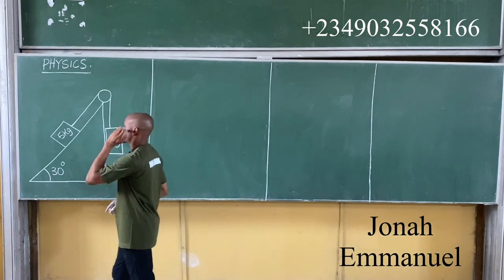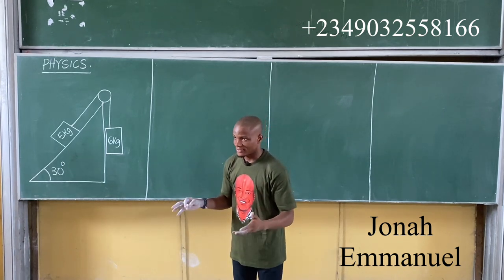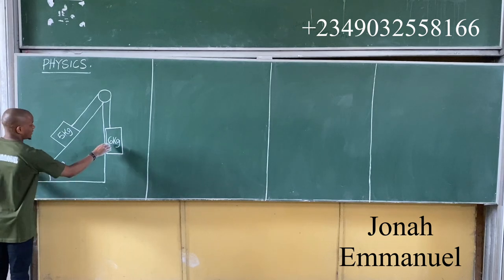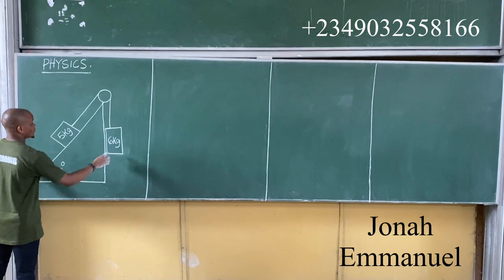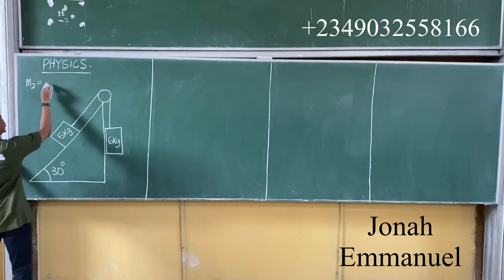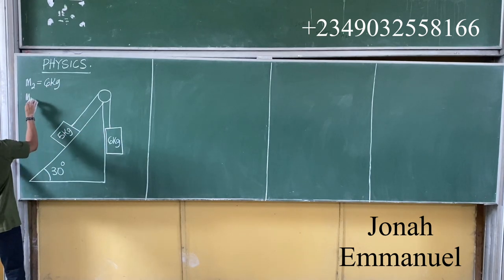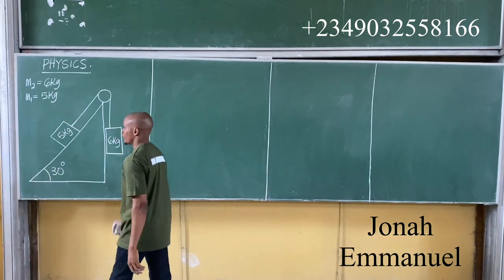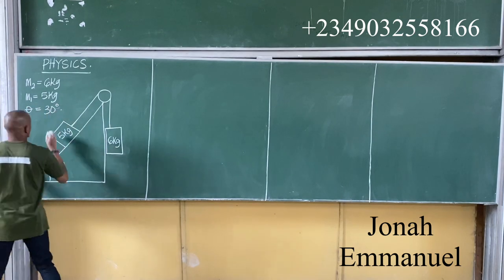So how do you solve this? We said your first concept, as always, is to look for your greater mass. Let's call them M1 and M2 as you choose. I'm choosing to call this one here M2, as we did in the previous class. So M2 should be about 6 kg, and this one here M1 is equal to 5 kg. Of course, theta here is 30 degrees.